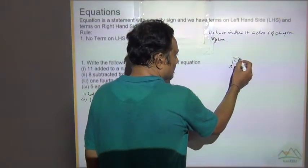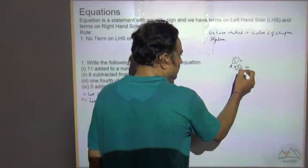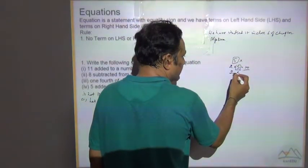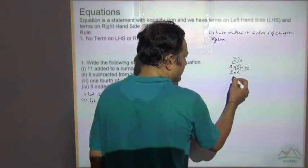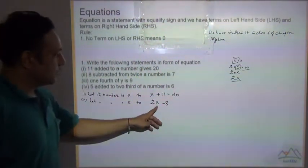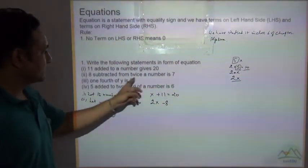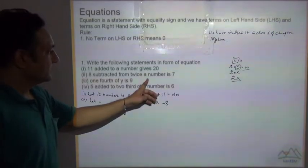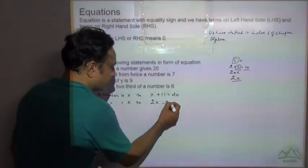If this number is x, this will become 2 multiplied by x, and we can write this as 2x also. So similarly, 2x minus 8, 8 subtracted from twice a number is 7.